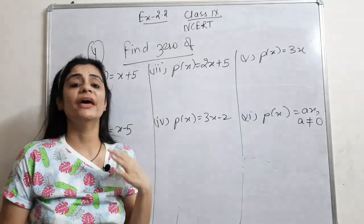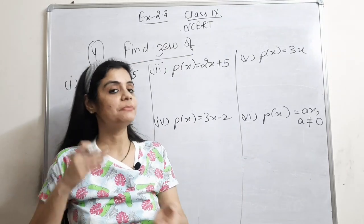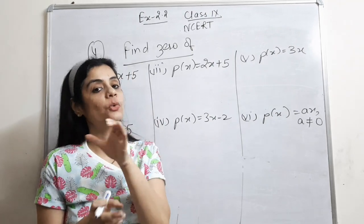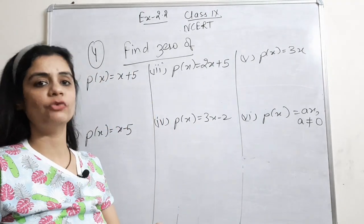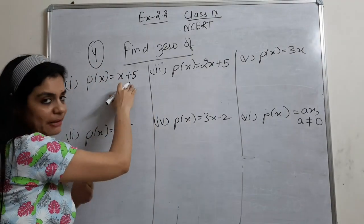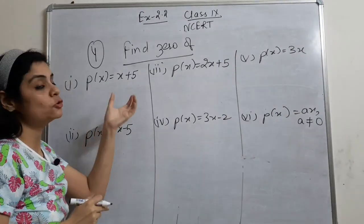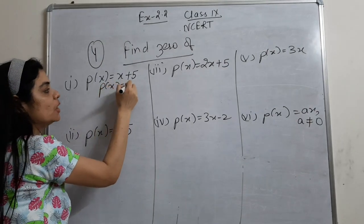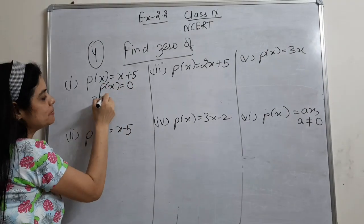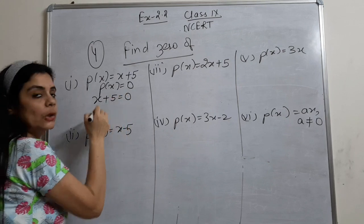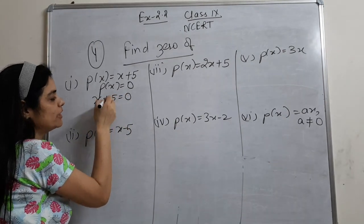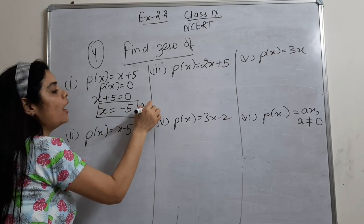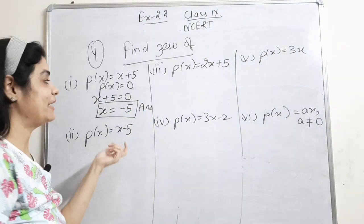Now here is the question where I have to find the zero. When we need to find the zero, we set the entire polynomial equal to 0. So x + 5 = 0, which means x = minus 5. My answer is x = minus 5. This is the zero of the polynomial.